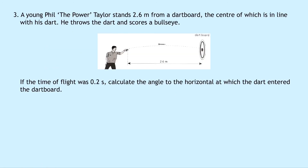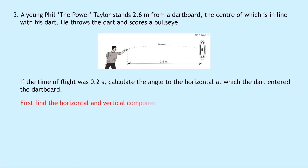Question three says a young Phil 'The Power' Taylor stands 2.6 meters from a dartboard, the center of which is in line with his dart. He throws the dart and scores a bullseye. If the time of flight was 0.2 seconds, calculate the angle to the horizontal at which the dart entered the dartboard. The dart follows projectile motion, so we need to find the horizontal and vertical components of the dart's initial velocity.